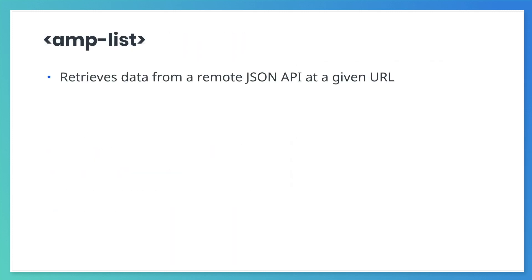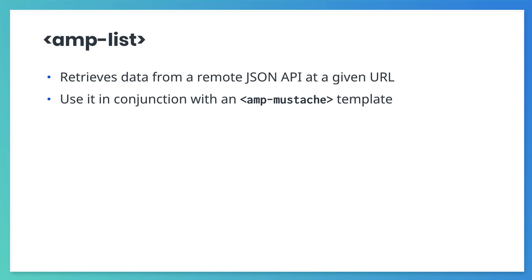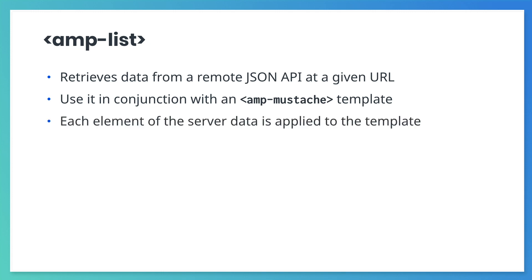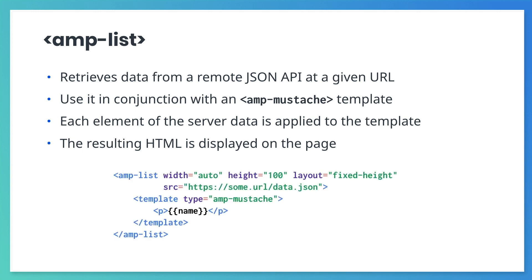We'll retrieve and display server data using the AMP list component. The AMP list component accepts a URL as the source attribute, and then it retrieves JSON from the API endpoint at that URL. The AMP list component is associated with an AMP mustache template. Each piece of server data retrieved will be applied to the AMP mustache template, which generates a fragment of HTML. All of the HTML generated from combining the server data and templates is added to the page. As an example, the code shown here is going to retrieve a list of names from the endpoint, and then display them on a page as a collection of paragraph tags.